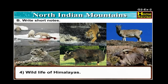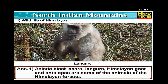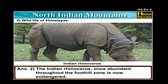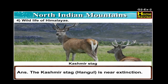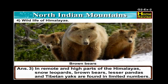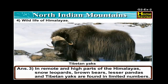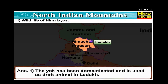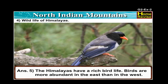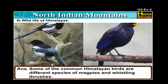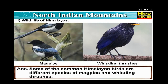Number four: Wildlife and Himalayas. Asiatic black bears, langurs, Himalayan goats and antelopes are some of the animals of the Himalayan forest. The Indian rhinoceros, once abundant throughout the foothill zone, is now endangered. The Kashmir stag, Hangul, is near extinction. In remote and high parts of the Himalayas, snow leopards, brown bears, lesser pandas and Tibetan yaks are found in limited numbers. The yak has been domesticated and is used as a draft animal in Ladakh. The Himalayas have a rich bird life; birds are more abundant in the east than the west. Common Himalayan birds include different species of magpies and whistling thrushes.